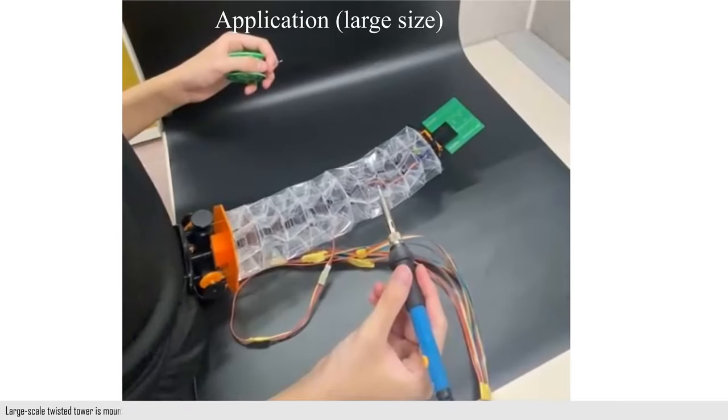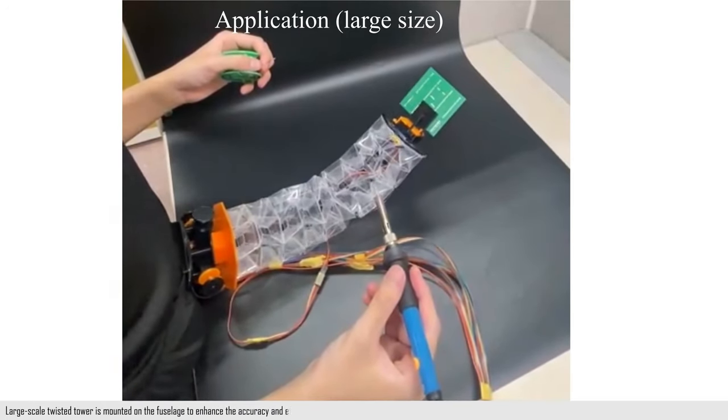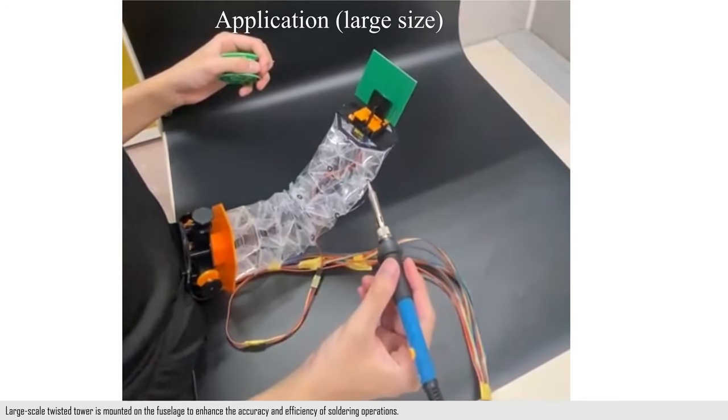Large-scale twisted tower is mounted on the fuselage to enhance the accuracy and efficiency of soldering operations.